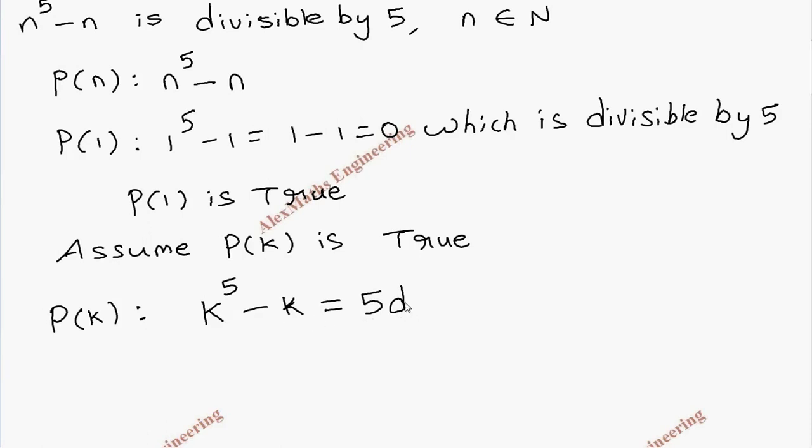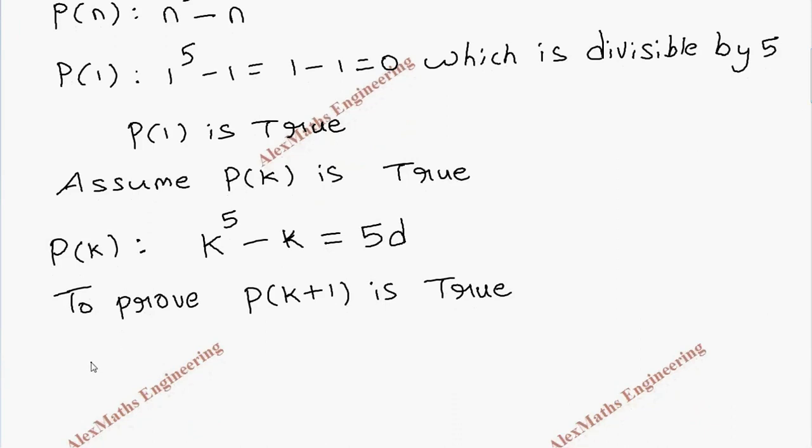Now to prove P(k+1) is true. It means P(k+1) is having an expression (k+1)^5 minus (k+1).